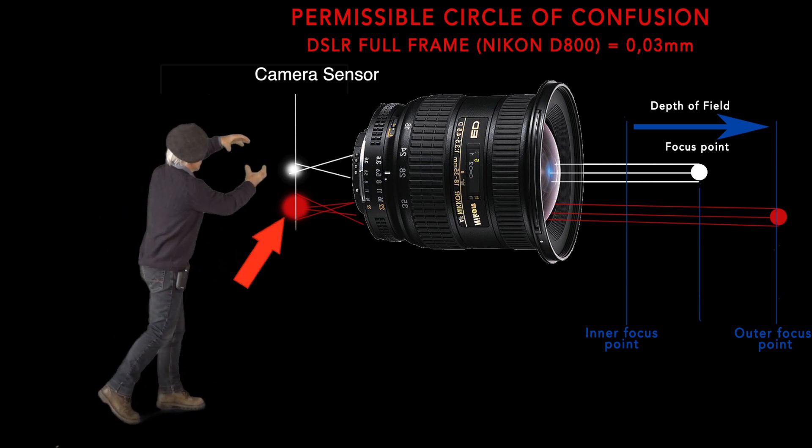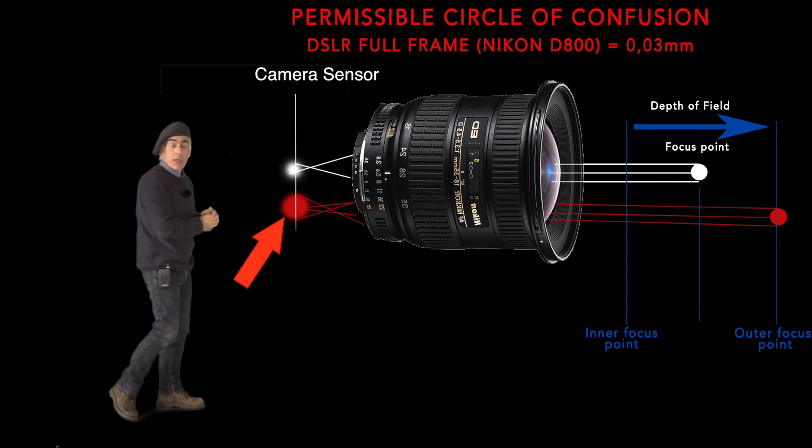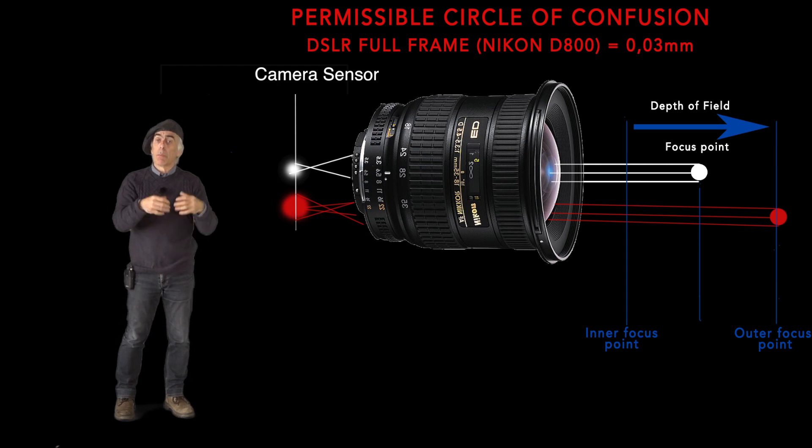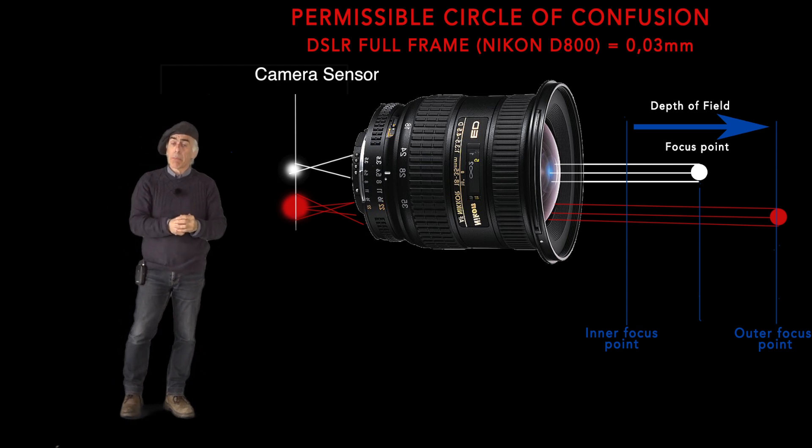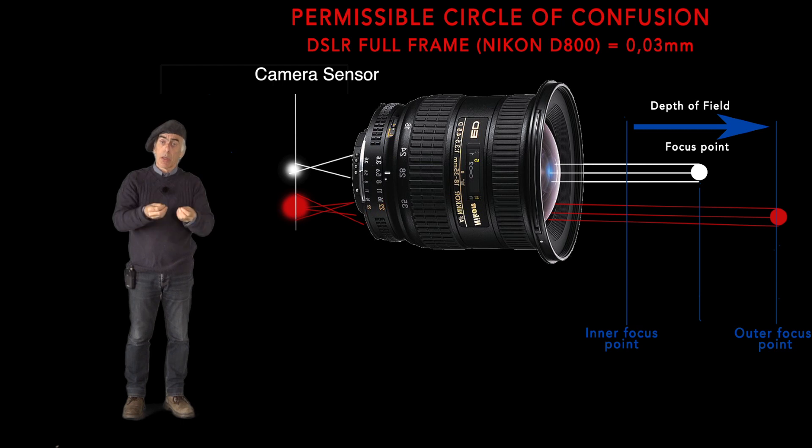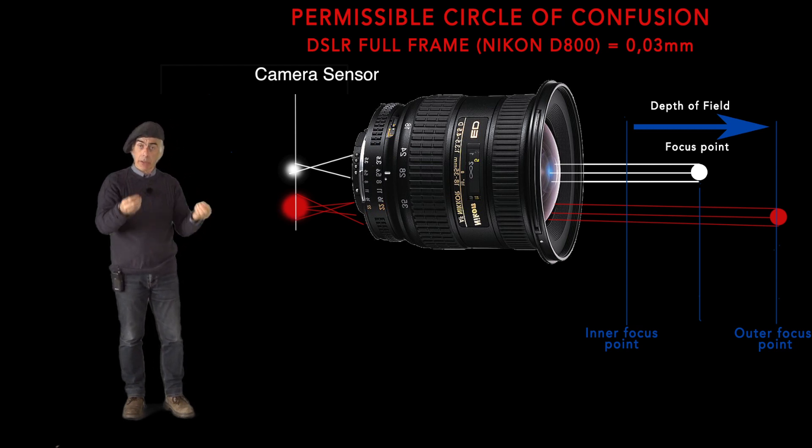If it's more than that, if that dish is growing up and it's becoming bigger than 0.03 millimeters, then it will become more blur. So this is what we call the permissible circle of confusion, and that's what most people talk about on the internet. It's used to calculate the depth of field.